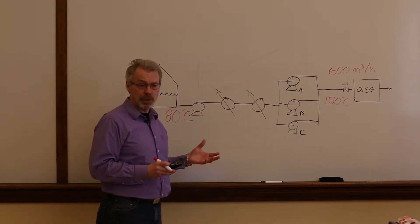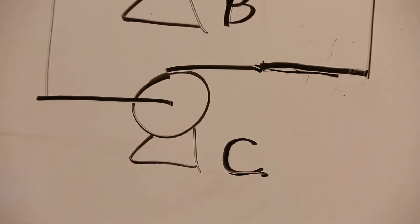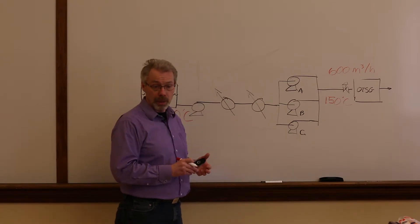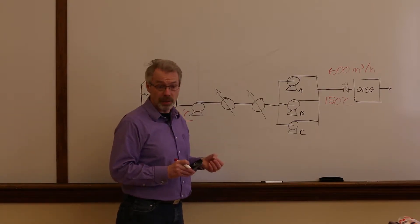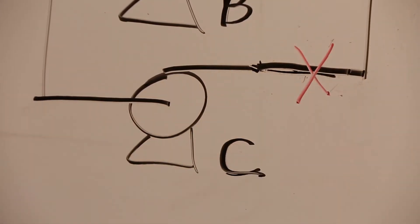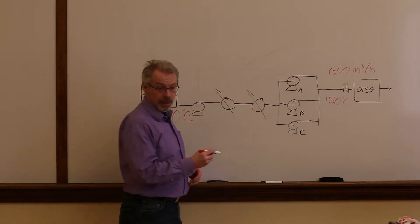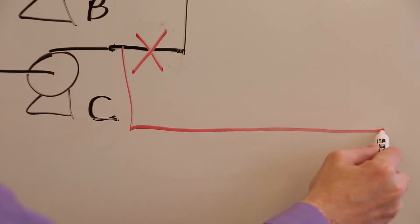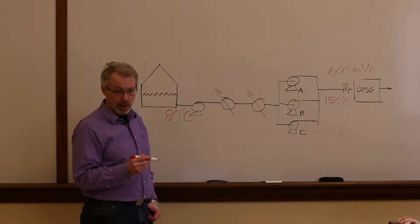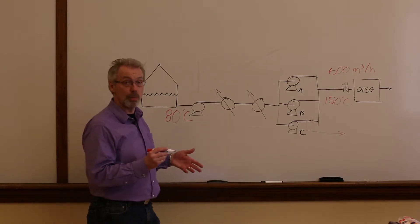At some point, the operations team will want to turn on pump C, most likely to do maintenance on one of the other pumps. The typical pump start procedure in a SAG-D facility is to close the outlet of the pump that we are starting and run the pump to the startup pond through a minimum flow bypass. The minimum continuous flow rate for this pump is in the order of 100 cubic metres an hour.